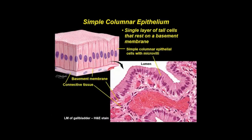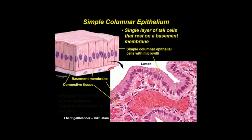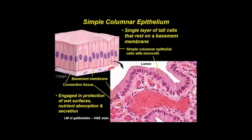Consisting of one-layer cells that are taller than they are wide, simple columnar cells look like closely packed, slender columns. Bases of cells rest on a basement membrane, and apical surfaces contact a lumen. The ovoid nucleus is centrally or basally located. This epithelium is mainly found in sites engaged in protection of wet surfaces, nutrient absorption, and secretion.